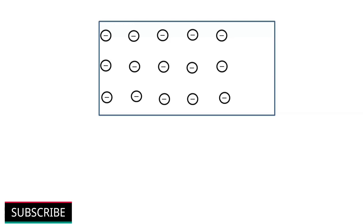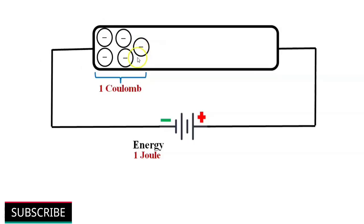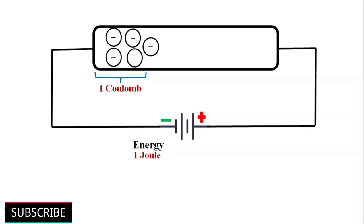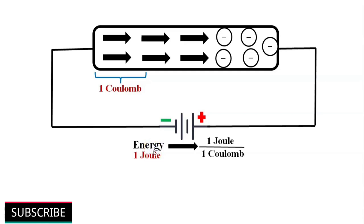To get uniform movement of charge, we require some sort of external force or energy, and that energy is measured in joules. Let's assume we have one Coulomb of charge in a conductor. To move this one Coulomb of charge from the negative to positive terminal, we require one joule of energy. So if one joule of energy is required to move one Coulomb of charge from negative to positive terminal, then the electrical supply stored in the form of an electrical charge in this battery is one volt.